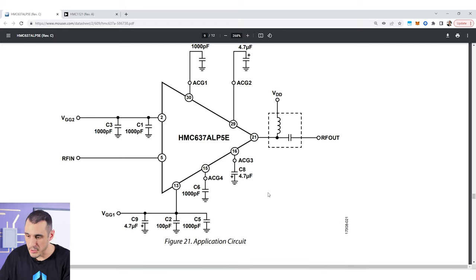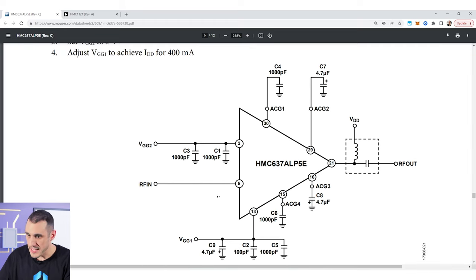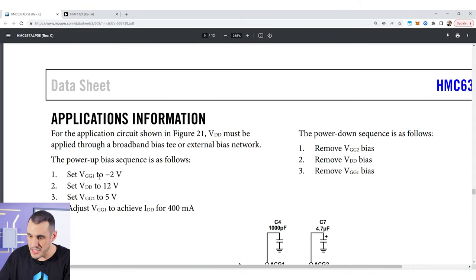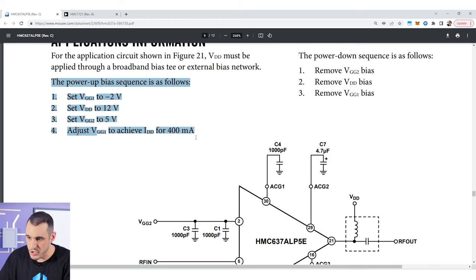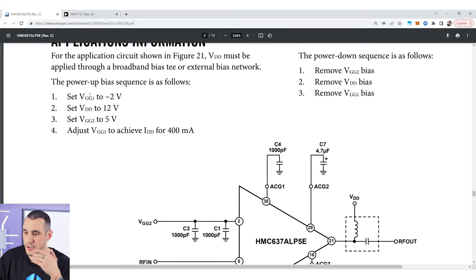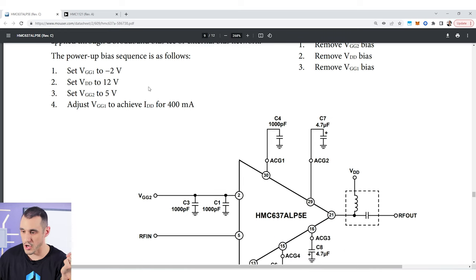This circuit here the way it's applied is called a bias T and essentially it only allows the DC voltage to come in and then go to the left through pin 21 and then it only allows the RF output to go right through the capacitor over here in this direction to the right. That's how you would power up this particular component. Now also again you need to then power this up in a specific order. You can see here that it lists the power up bias sequence right here. Now this bias sequence could be applied manually such as with jumpers.